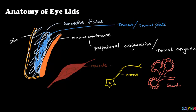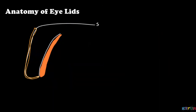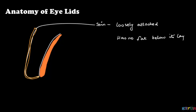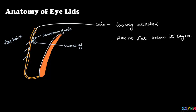There is no cartilage in the eyelid. The skin is loosely attached and there is no fat underneath its layers. It has fine hairs, and like other parts of the body, it has sebaceous and sweat gland openings near the hair follicle.